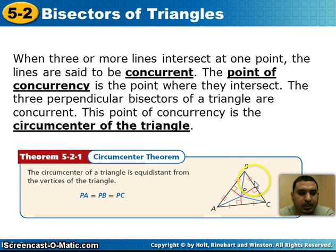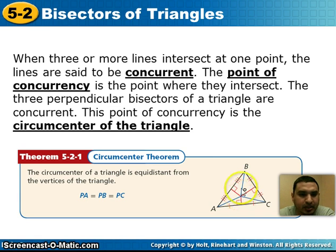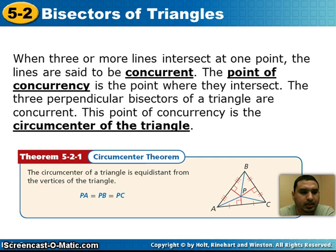If you look at this picture, the red segments are the perpendicular bisectors. They all meet at point P. Point P is the circumcenter of this triangle, and the distance from that circumcenter to each vertex is equal — the distance from P to B equals the distance from P to A and the distance from P to C. The perpendicular bisectors intersect at the circumcenter, and the distance from the circumcenter to each vertex is equal.